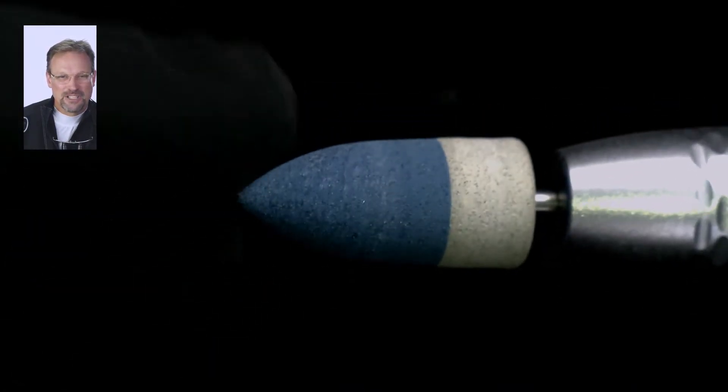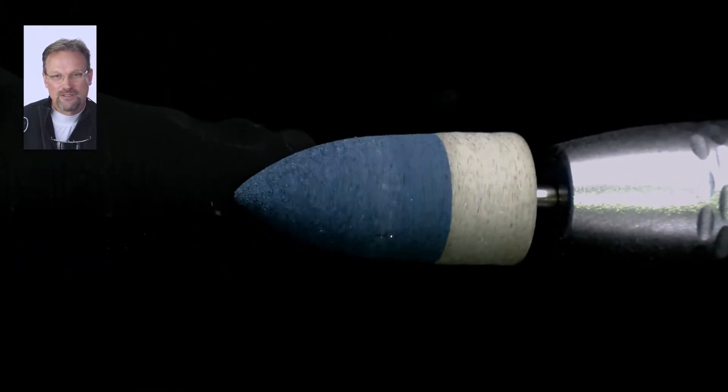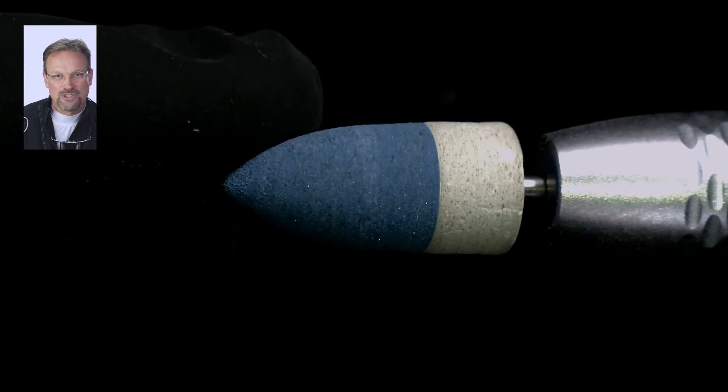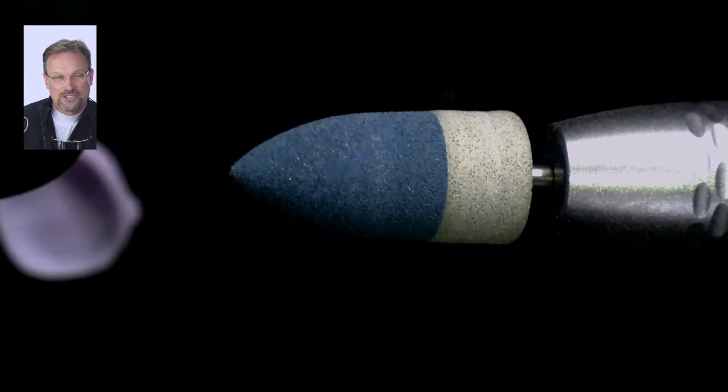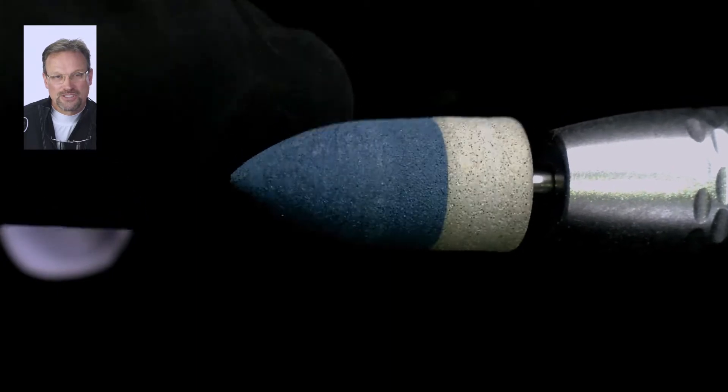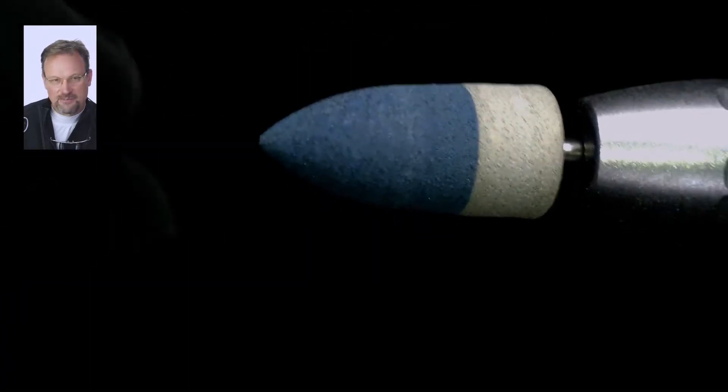So this is the sprue removal system. It's a straight handpiece burr. It's got two grits to it. The white is the more coarse, and then the blue is specifically designed to polish, or it actually kind of burnishes materials